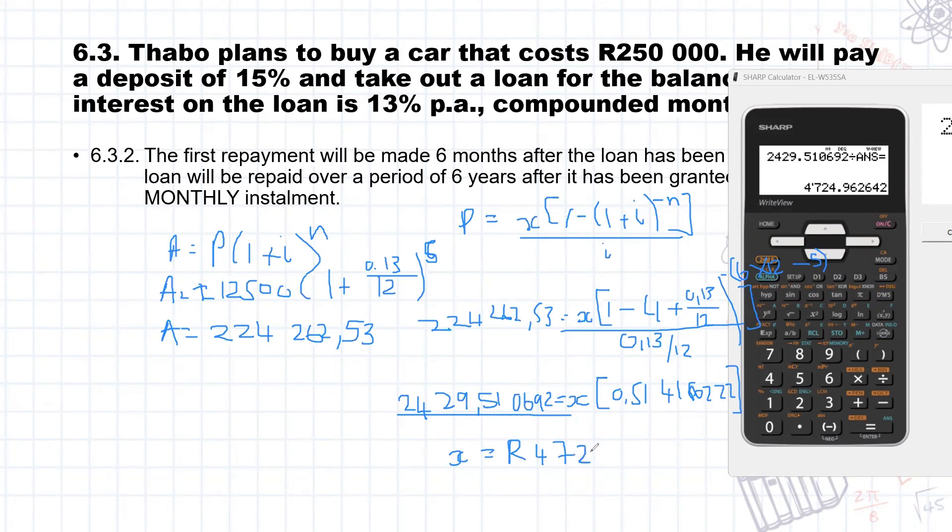And that will give us a monthly repayment of X equals R4,724.96 per month, which you will pay over six times 12, which is 72 minus five, so it's over 68 months. So that is our solution.